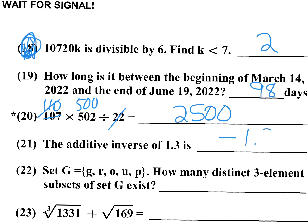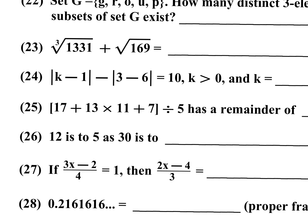The additive inverse — count that as a bonus problem — is negative 1.3. After number 20, we're doing some bonus problems. Looking at number 25: we want the remainder when dividing by 5. For 17 plus 13 times 11, find the remainder of each piece: 17 divided by 5 remainder 2, 7 divided by 5 remainder 2, 13 divided by 5 remainder 3, 11 divided by 5 remainder 1. Apply order of operations: 2 plus 3 times 1 plus 2. That gives 7; but 7 divided by 5 has a remainder of 2, so the answer is 2 — writing 7 would be incorrect.